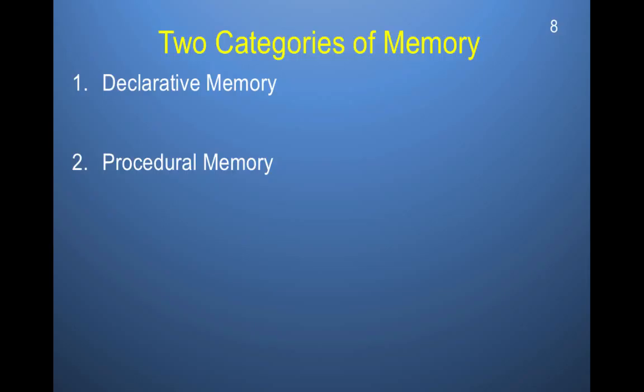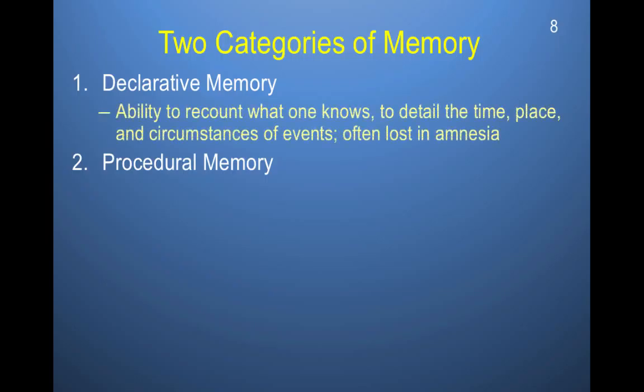Those two types of memory align with the two categories of memory: declarative memory and procedural memory. Declarative memory is the ability to recount what one knows, to detail the time, place, and circumstances of events. Declarative memory is often lost in amnesia.